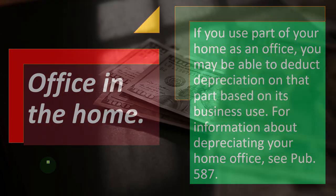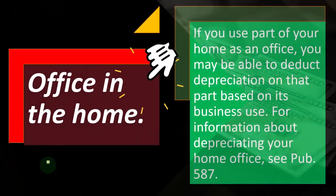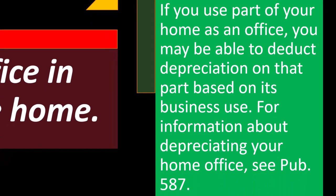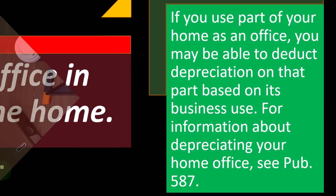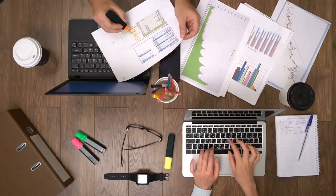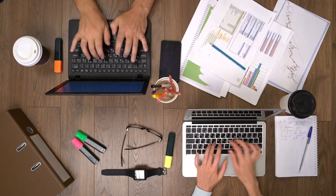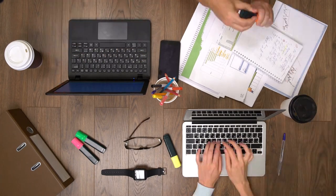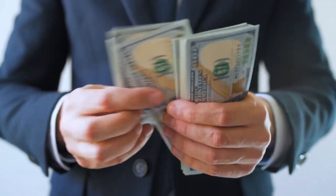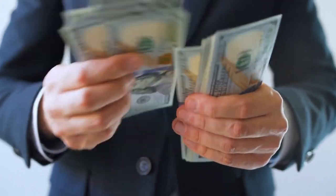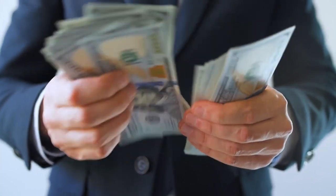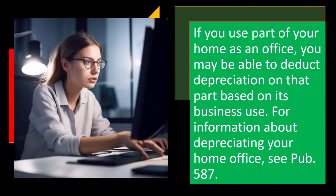Let's talk about an office in the home. If you use part of your home as an office, you may be able to deduct depreciation on that part based on its business use. There are multiple things related to the deduction of the home office — you might have the utility bill or water bill paid for the entire home, but you might be able to allocate a portion of it to the office, because it would be an ordinary and necessary business expense if you're allowed to have the home office.